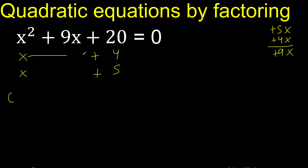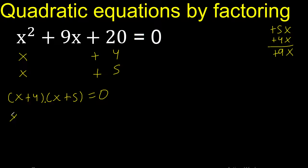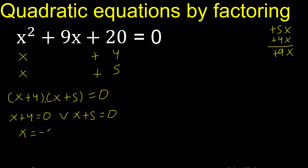Therefore, like this, equal 0. By the zero product property, this factor equals 0 or this factor equals 0, giving x equals minus 4 or x equals minus 5.